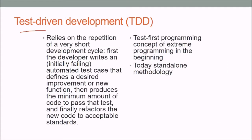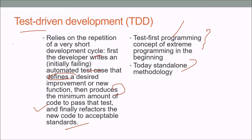TDD — Test-Driven Development — relies on repetition of very short development cycles. The developer writes an automated test case that defines a desired improvement or new function, then produces the minimum amount of code to pass that test, and finally refactors the new code to acceptable standards. TDD is the test-first programming concept of Extreme Programming and today's standard run methodology.